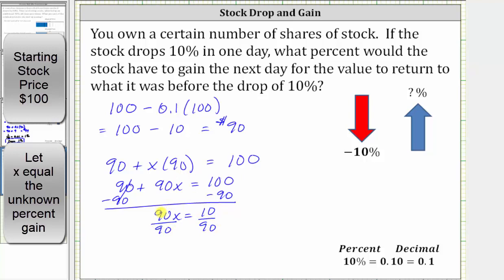Simplifying, 90 divided by itself simplifies to one, and one times x is x. We have x equals 10/90, which simplifies to 1/9. But we want a percent, and therefore we'll divide one by nine to convert to a decimal, and then to a percent.